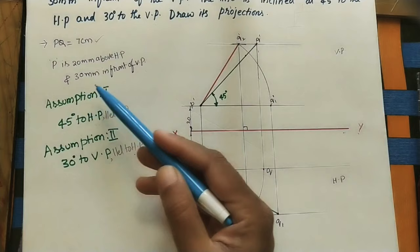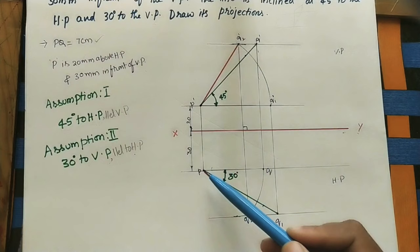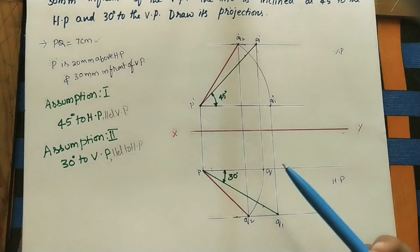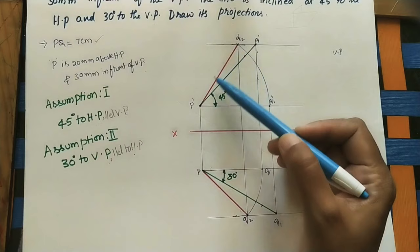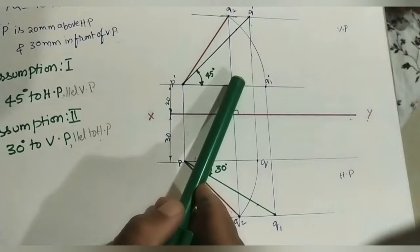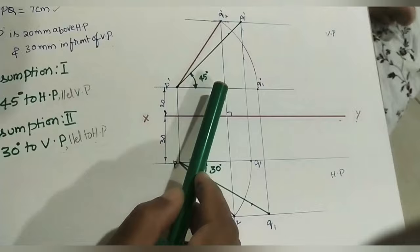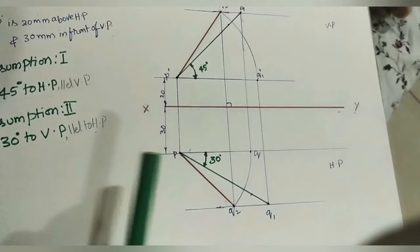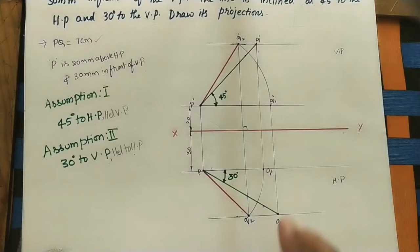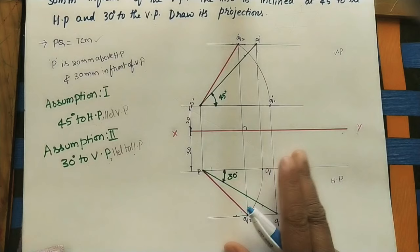Mark the given dimensions: P is 20 mm above HP and 30 mm in front of VP. Mark the angles. Sometimes the question asks for the final front view length or final top view length — measure with the scale. They may also ask what angle the final front view makes with the HP or VP, or what angle the final top view makes — measure using the protractor and write the value. This is the method for a line inclined to both planes. Please like, subscribe, and share. Thank you for watching.